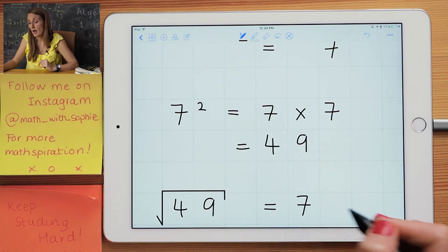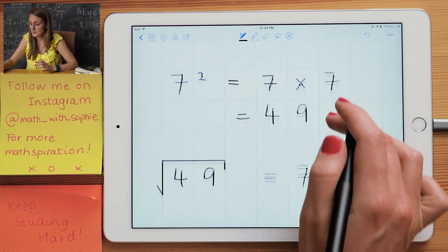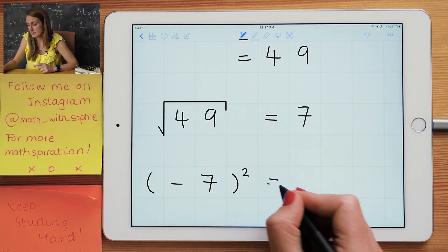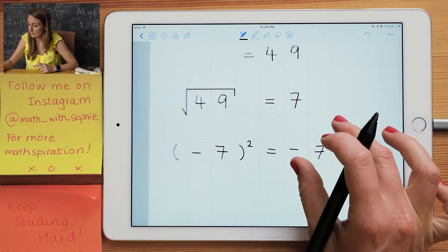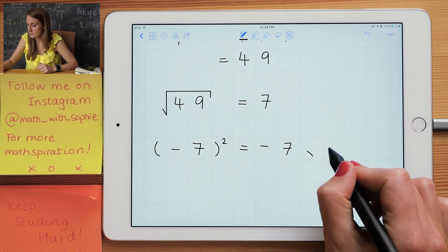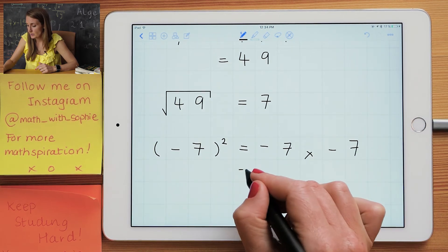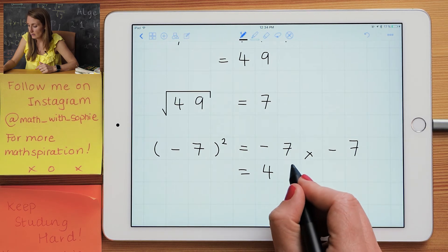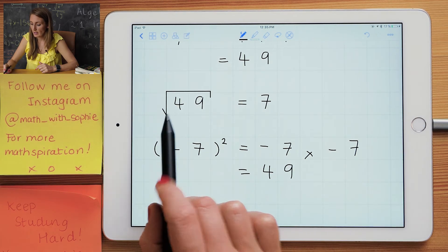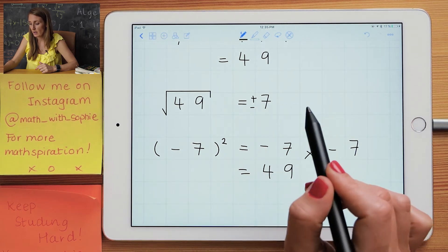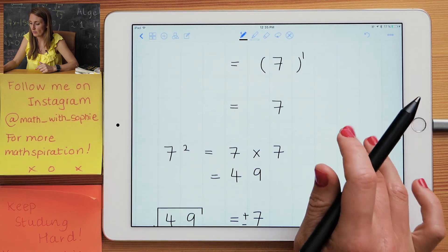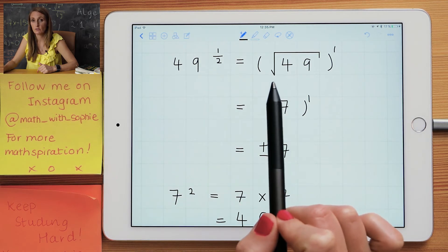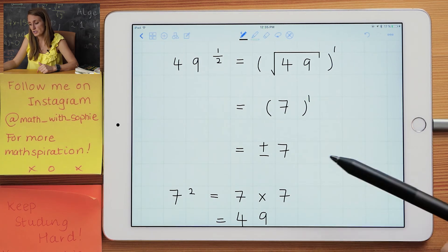However, you can also say that minus 7 squared is equal to minus 7 times by minus 7, which is equal to minus times minus is plus, plus 49. So the square root of 49 can be plus 7, but it can also be minus 7. So remember that with your square roots. So our answer for 49 is the square root of 49, which gives us two answers: plus or minus 7.